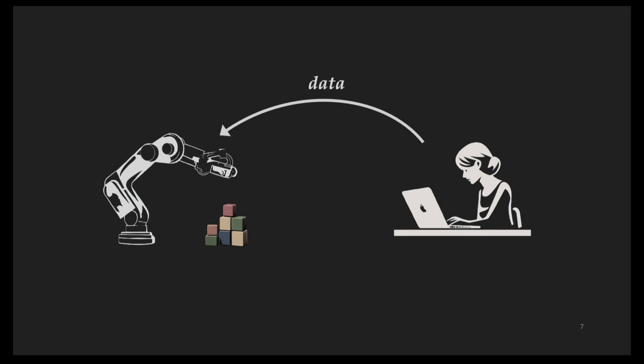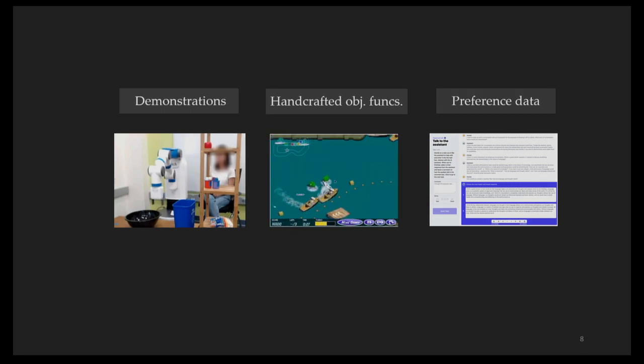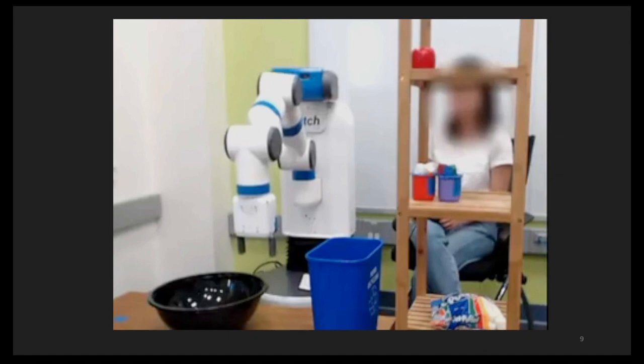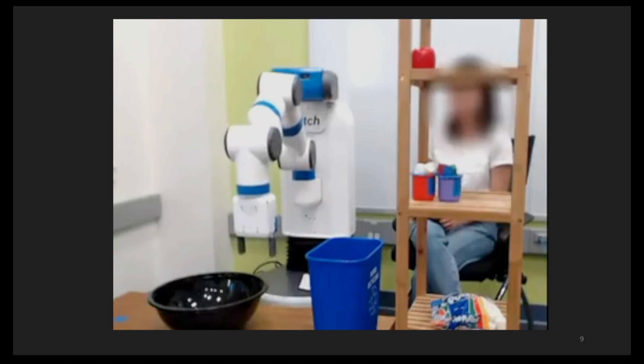The basic strategy so far has been to use data and feedback generated by humans to train our models. There are several ways that models have been learning from our data. A very popular approach has been to give demonstrations. While this approach has been pretty effective, it's hard to get humans to provide good quality, clean data. For example, this is me struggling to demonstrate how to pour the red cup into the black bowl.